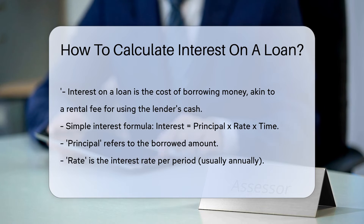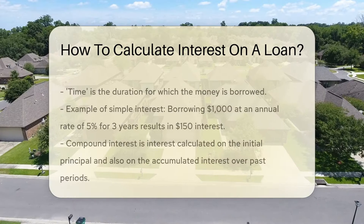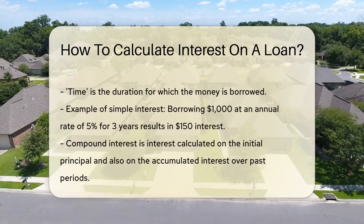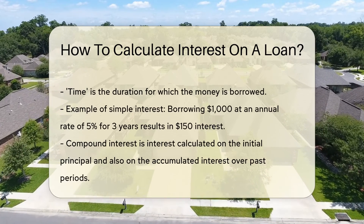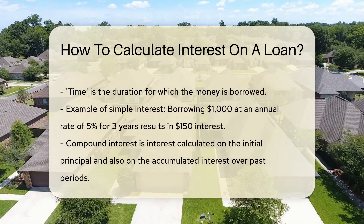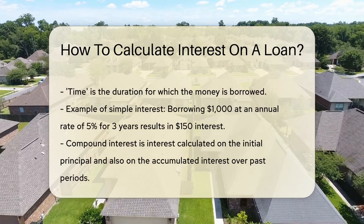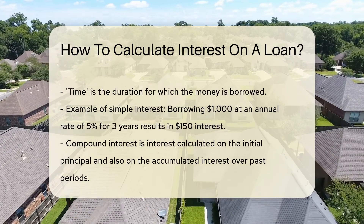Now, on to the main act. How is this fee calculated? There are different methods, but we'll focus on the simple interest formula, which is like the vanilla ice cream of interest calculations — basic, but classic. The simple interest formula is: Interest = Principal × Rate × Time.